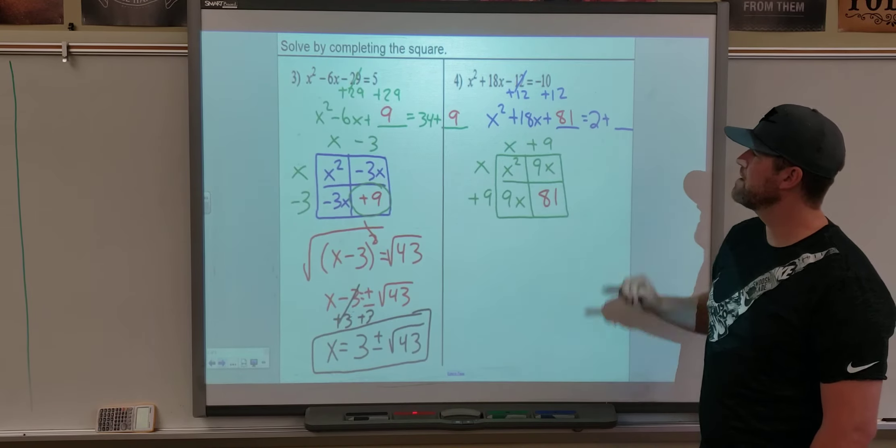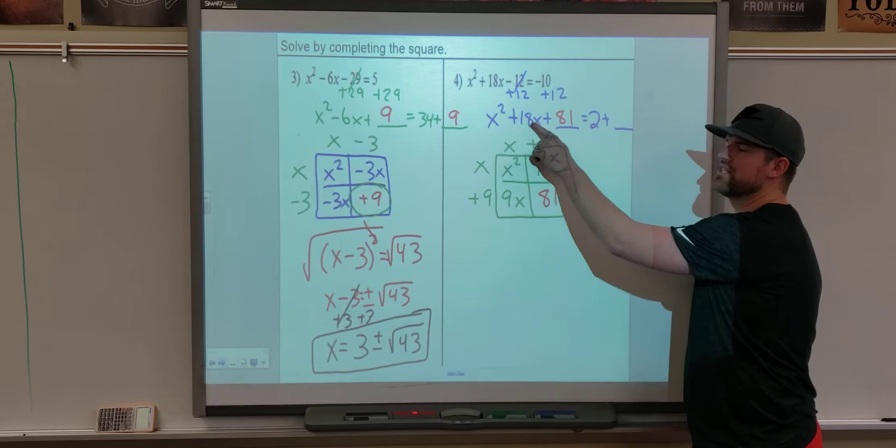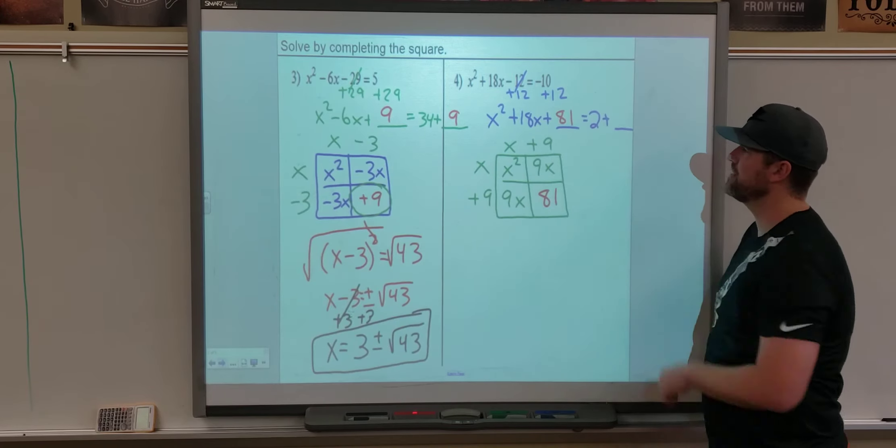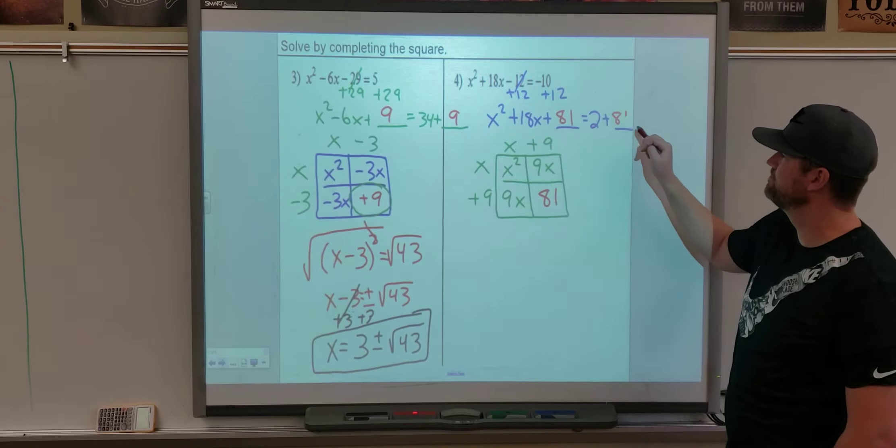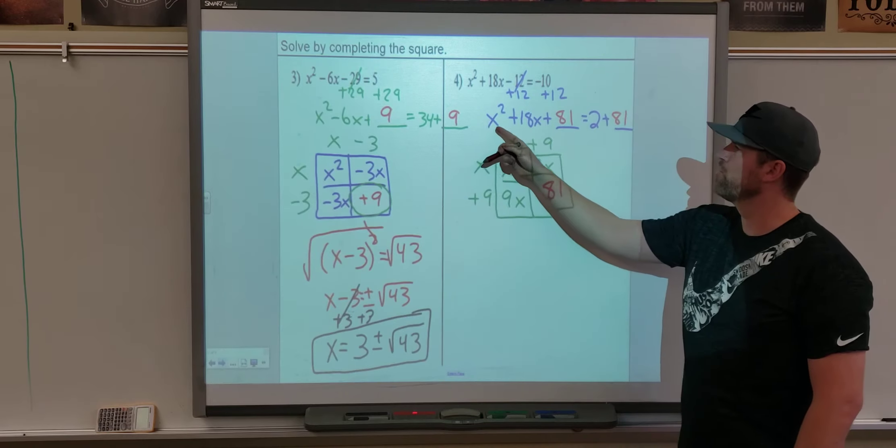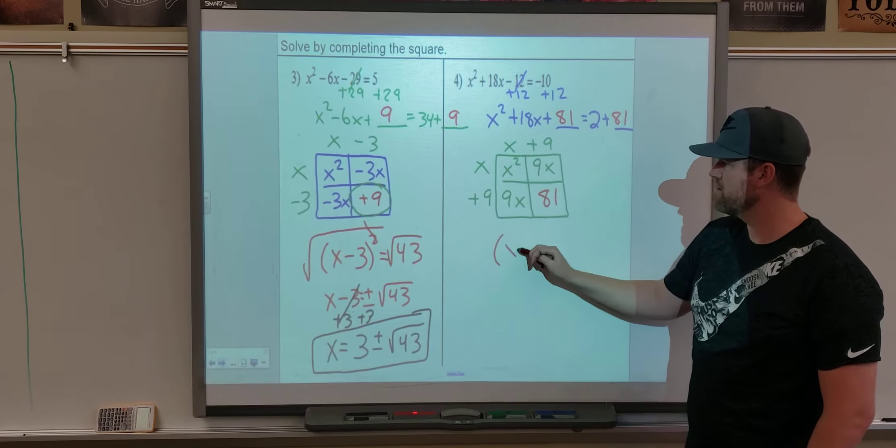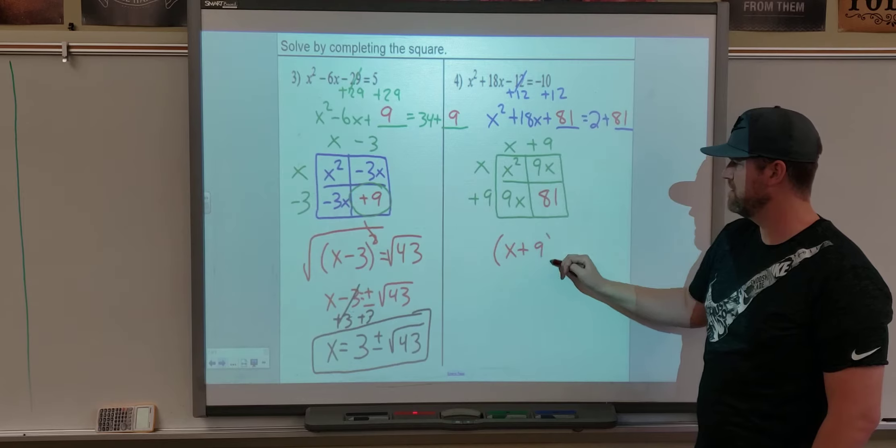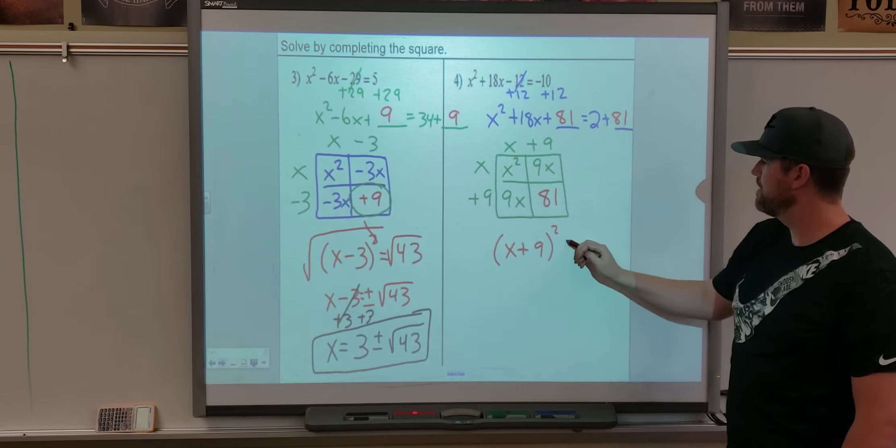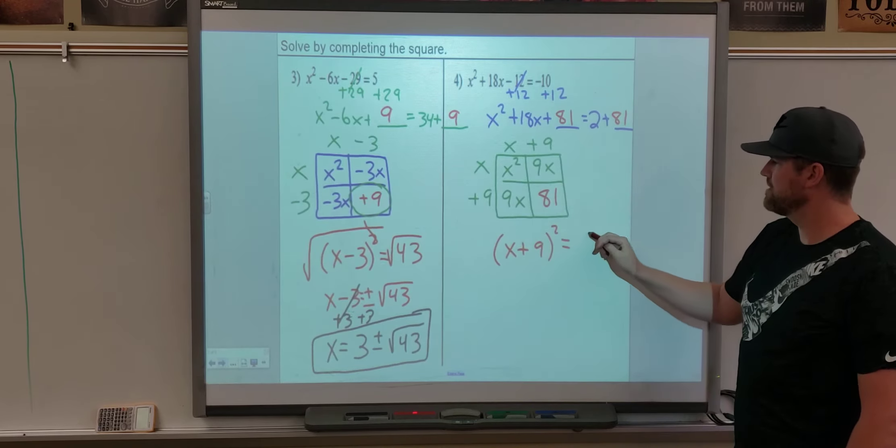We're going to add 81 in there. But again, if we're going to add 81 to the left side of the problem, we have to add the 81 to the right side as well. So our new trinomial on the left is a perfect square, x plus 9 squared, and then 2 plus 81 is 83.